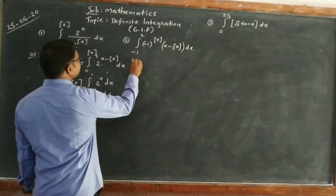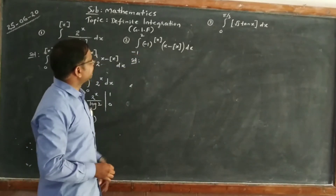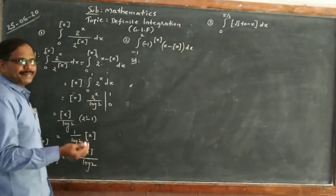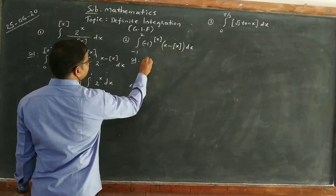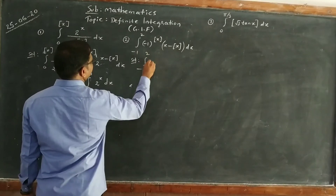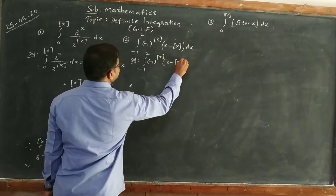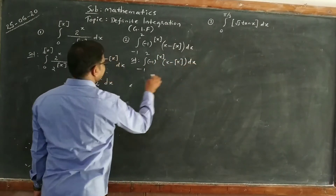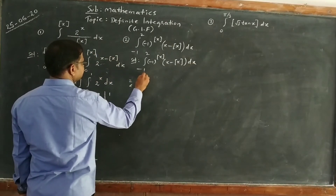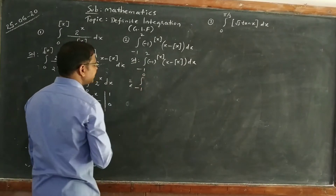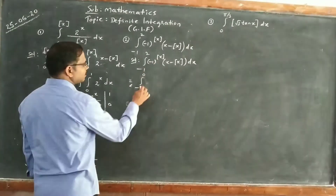See this problem: integral from -1 to 2 of (-1)^[x] times (x - [x]) dx. I can split this as the sum of integrals over [-1, 0], [0, 1], and [1, 2]. Between -1 to 0, what is the value of [x]? You know it.